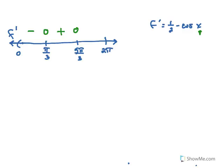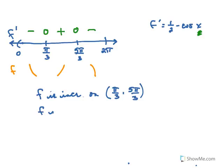If we choose something in between 5 pi over 3 and 2 pi, maybe 3 pi over 2, and substitute into the derivative, we get a negative answer. Since the derivative changes from negative to positive to negative, that tells us the original function is going from decreasing to increasing to decreasing again. So f is increasing on the interval from pi over 3 to 5 pi over 3, and f is decreasing on the interval from 0 to pi over 3.